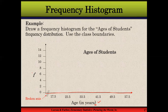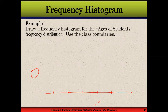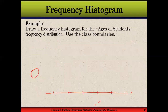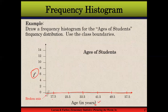On the vertical axis we have frequency. Next we have to draw bars. We have the class boundaries 17.5, 25.5, 33.5, 41.5, 49.5, and 57.5 on the horizontal axis, and these come from the class boundaries we calculated. The lower class boundary of the first class is 17.5 and the upper class boundary of the last class is 57.5, so this graph starts from 17.5 and ends at 57.5, with all class boundaries on the x-axis.